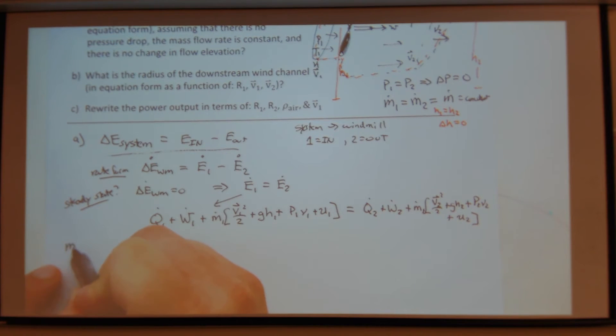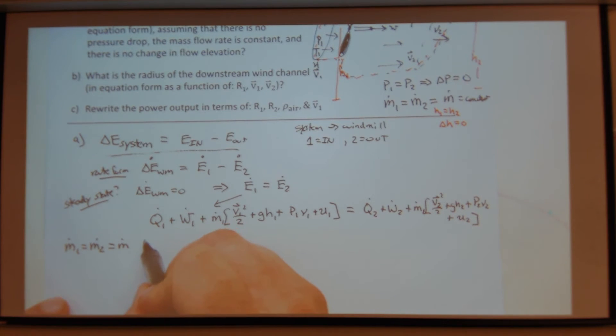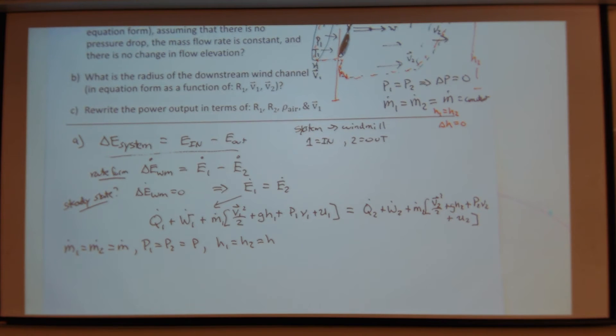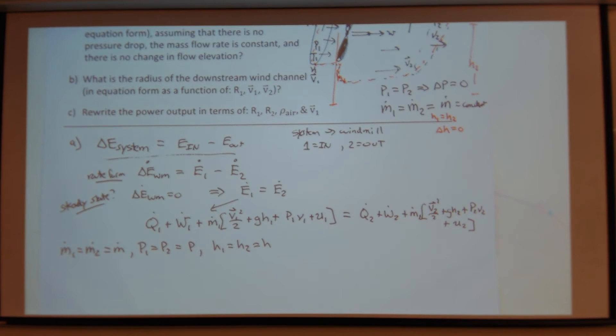So the problem statement said that M1 dot equals M2 dot. And we just said it's equal to M dot. And we have P1 equals P2. So let's just say it's equal to P. And there was no change in elevation. So h1 equals h2, which equals h. Is there heat input to my problem? One represents in. Is there a rate of heat input in the problem statement? So we can cross that out. Is there work in?